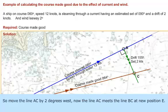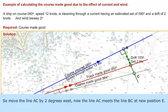So move the line AC by 2 degrees west. Now the line AC meets the line BC at a new position E.